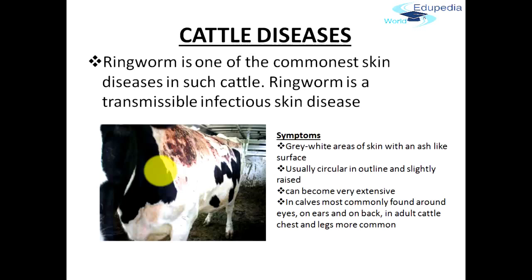Usually they will be circular in outline and slightly raised, so you can feel that they are slightly raised. They are coming out of the skin and can become very extensive. In calves, most commonly they are found around eyes, on ears, on back, and in adult cattle they are also found in the chest and legs more commonly.